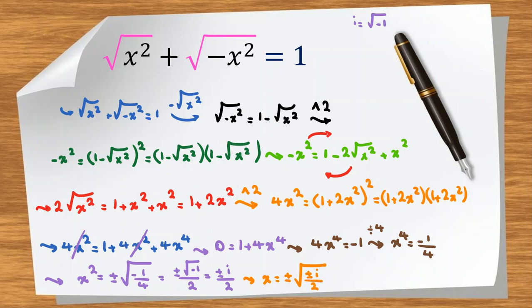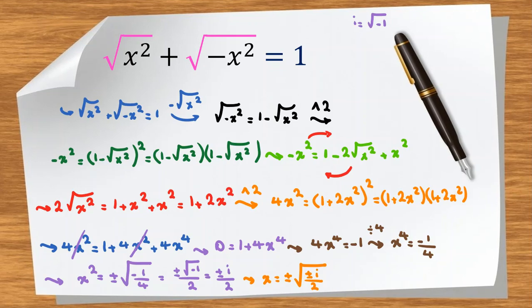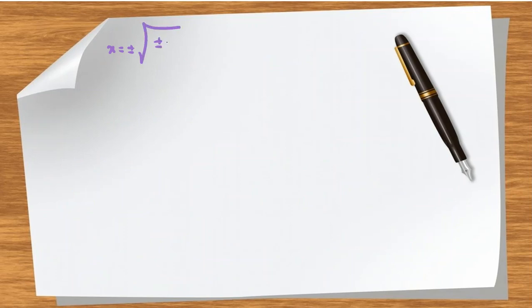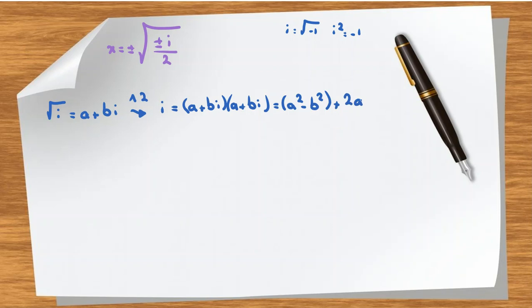We want to simplify x equals plus or minus square root of plus or minus i over 2. For this we need to find what square root of i and square root of negative i are. Suppose the square root of i equals a plus bi. Squaring both sides: i equals a plus bi squared, which expands to a squared minus b squared plus 2abi. Since i squared equals negative 1, we get a squared minus b squared plus 2abi.